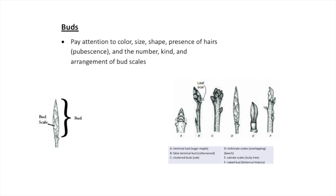Another really important winter ID character are the buds — these are going to be the leaves in the spring. You want to pay attention to the size, the number, the color, the shape, and whether or not they're growing opposite one another or alternatingly up the twig.